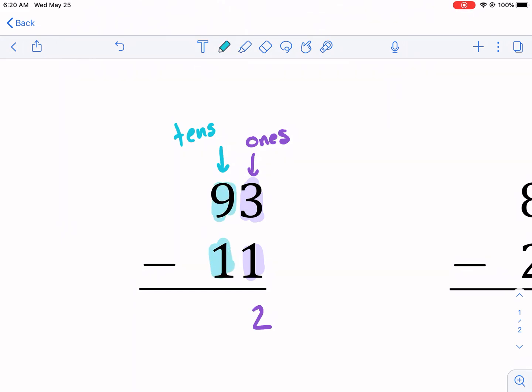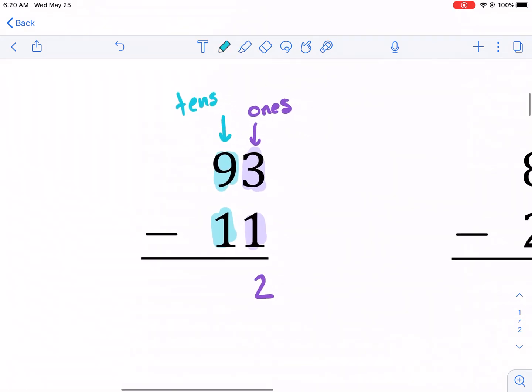So essentially, there's two different ways we can think about these numbers. And I just want to give this background, even though it's pretty obvious. Let me put 8. So 9 minus 1 is 8. So our answer is 82.